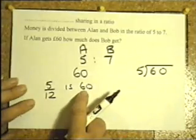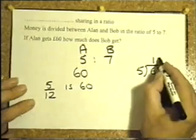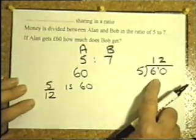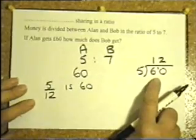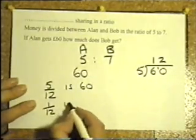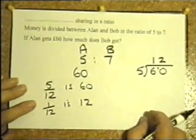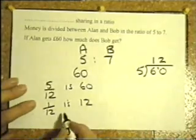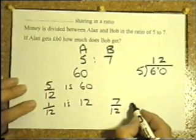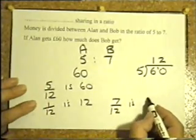If we divide by 5 because Alan is getting 5/12 of the money and 5/12 of the money is £60, if we divide this by 5 that is 1/12 of the amount of money. In other words 1/12 is £12. Now Bob himself, he's getting 7/12. So he's getting 7 of these £12. So 7/12 is 7 lots of 12. 7 times 12 is 84.